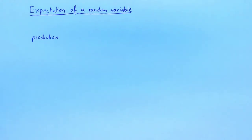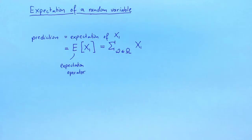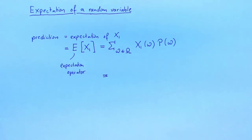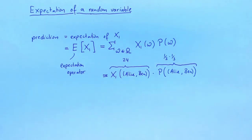It turns out that a good prediction of x1 is the expectation of x1. To indicate that we are computing the expectation of a random variable, we use the expectation operator, capital E, and put the name of the random variable, here x1, in brackets. To compute the expectation, we sum over all samples in the sample space. For each sample, we take the value of x1 evaluated on the sample, and multiply it by the probability p of omega — that is, the probability of drawing this particular sample. For example, one of the samples is Alice-Ben: we take x1 evaluated at Alice-Ben, which is 24, and multiply by the probability of drawing Alice-Ben. If everyone gets drawn with equal probability, then this probability will be 1/3 times 1/3, or 1 over 9.